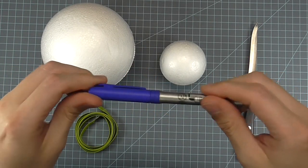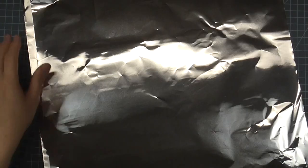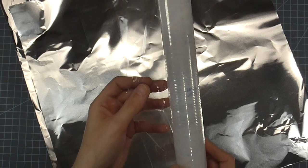You'll need a permanent marker to mark the styrofoam, a measuring tape, you'll need regular weight aluminum foil, and you'll also need cling wrap.